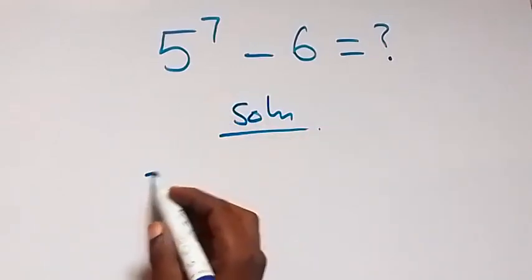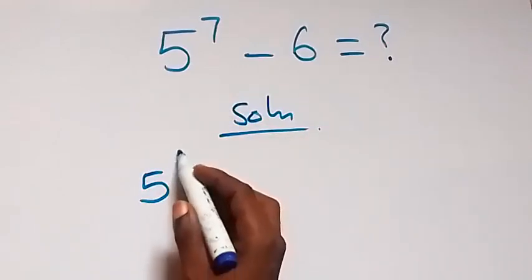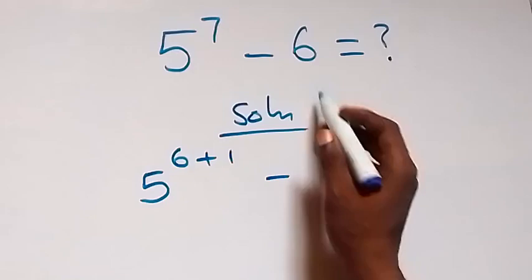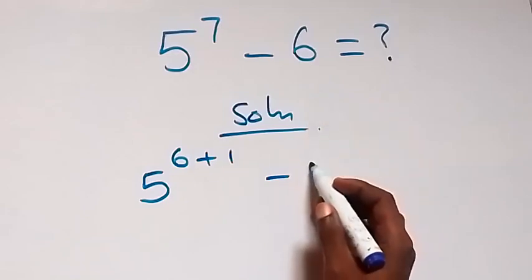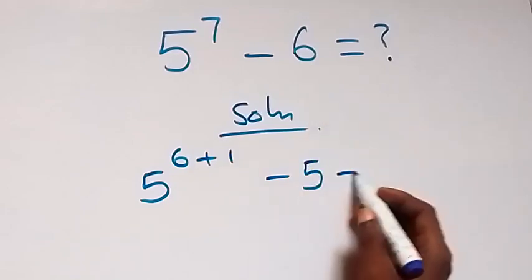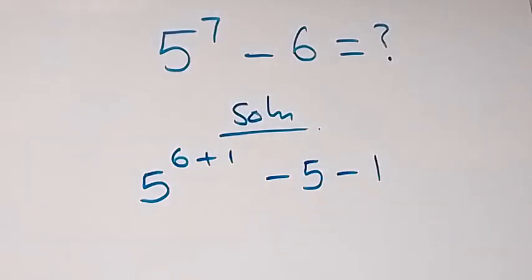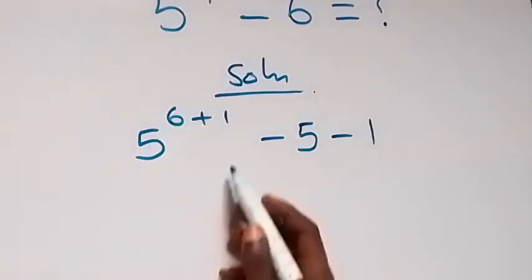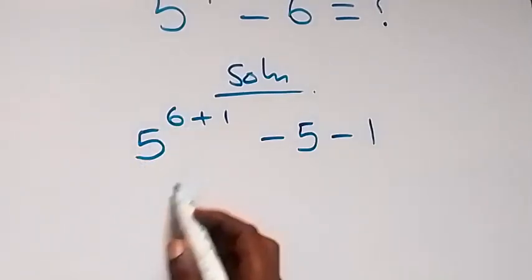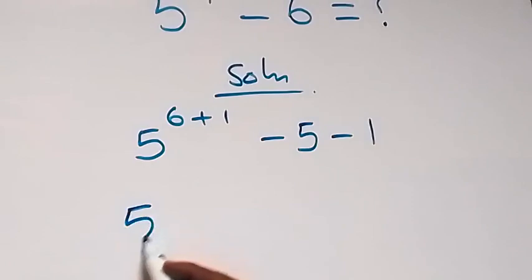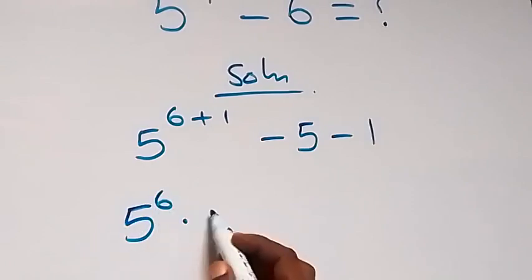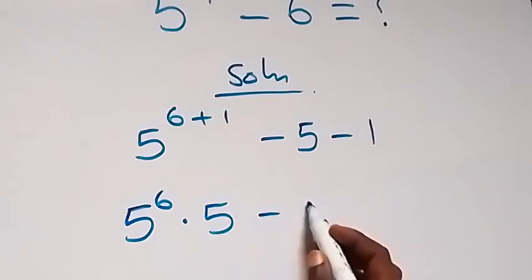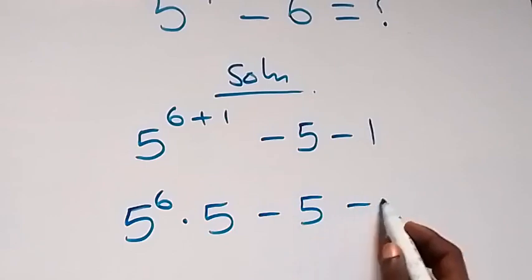we can write this as 5 raised to power 6 plus 1, then minus. Minus can be written as minus 5 to the minus 1. Then from here, apply the law of indices here. We can separate this as 5 raised to power 6 times 5 raised to power 1, which is also 5, then minus 5 minus 1.